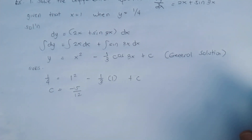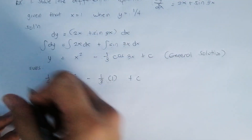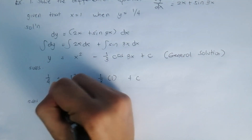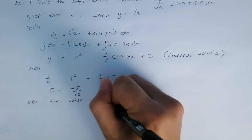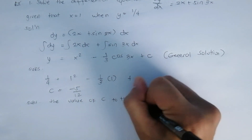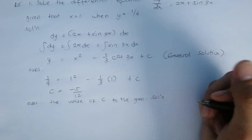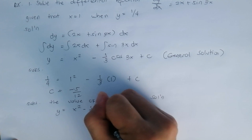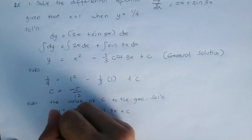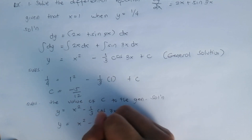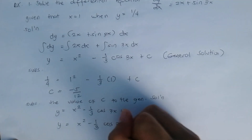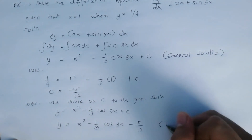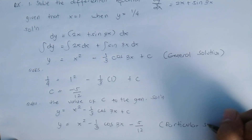For the particular solution, substitute the value of C into the general solution. Given the general solution y = x² - (1/3)cos(3x) + C, substituting C = -5/12 gives y = x² - (1/3)cos(3x) - 5/12. This is the particular solution.